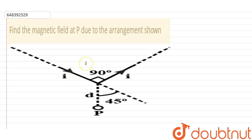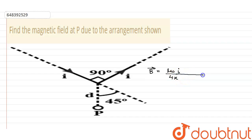As per the arrangement, we know the formula to get to our result. The magnetic field at point P is given by the formula: B = (μ₀ / 4π) × (I / d) × (sinθ + sinφ), where d is the perpendicular distance from the wire to the point P.